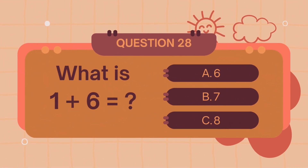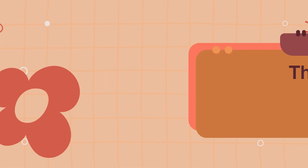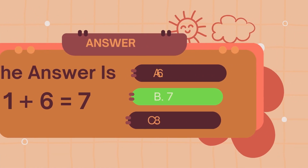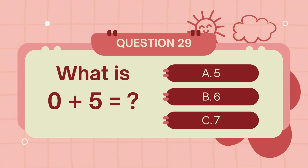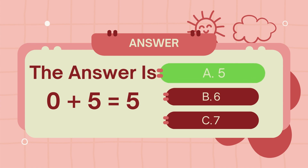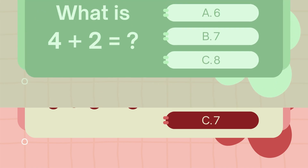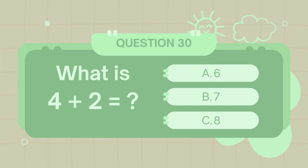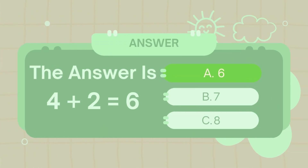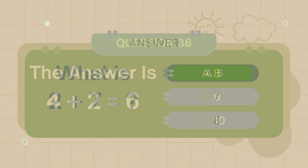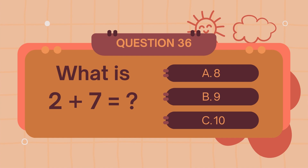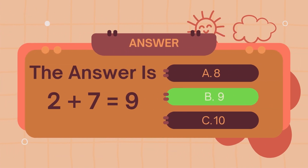What is 1 plus 6? What is 6? The answer is 7. What is 4 plus 5? What is 5? The answer is 5. What is 4 plus 2? What is 2 plus 6? The answer is 6. What is 2 plus 7? The answer is 9.